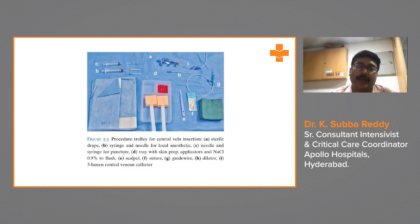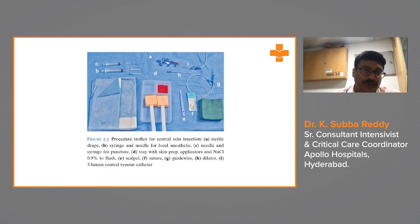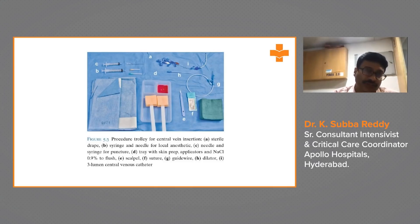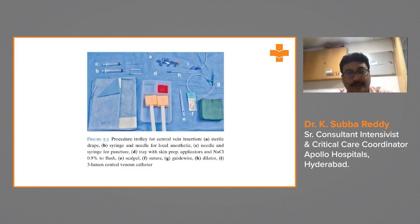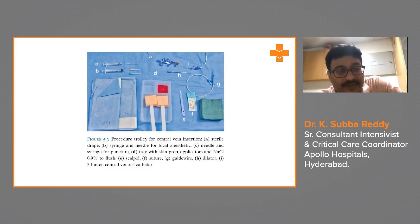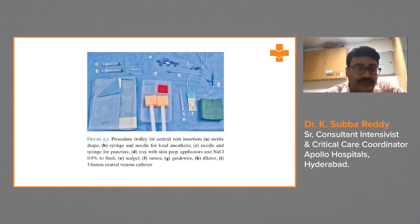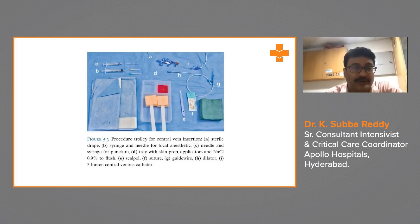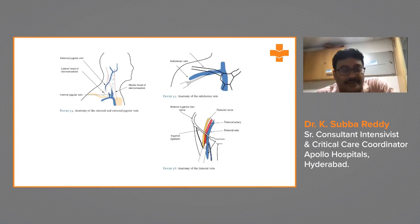For central line insertion, you must follow the care bundle compliance. The central line bundle includes a pre-insertion bundle covering antiseptic measures, and a maintenance bundle. You should have compliance for the central line bundle, VAP bundle, and catheter bundle. Equipment includes a sterile drape, syringe and needle for local anesthetic, puncture tray with skin preparation, normal saline flush, scalpel, suture, guidewire, dilator, and a three-lumen central line catheter.